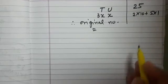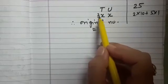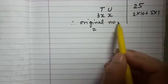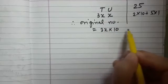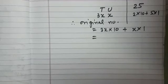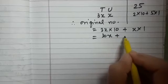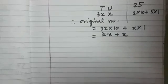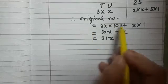Similarly if the number is 3x, x, so what is the original number? Yes, it will be 3x into 10 plus x into 1. Simplify this. What do you get? We get 30x plus x. Simplify this further. We get 31x. So this is the original number.